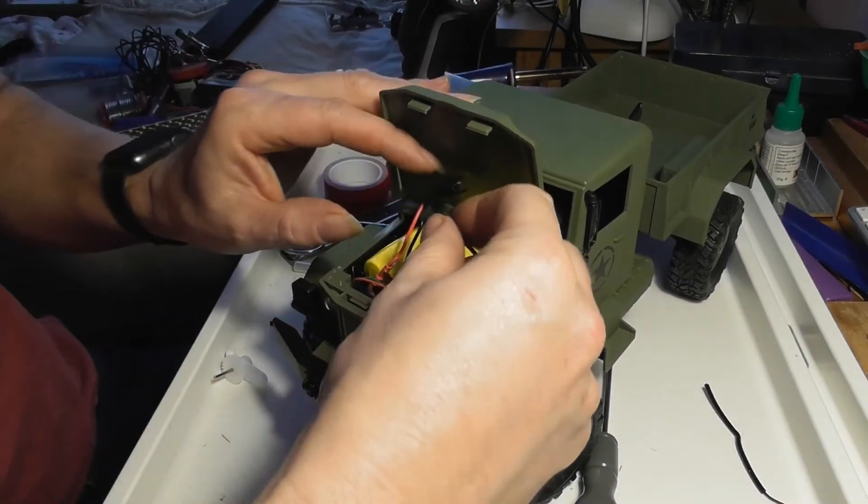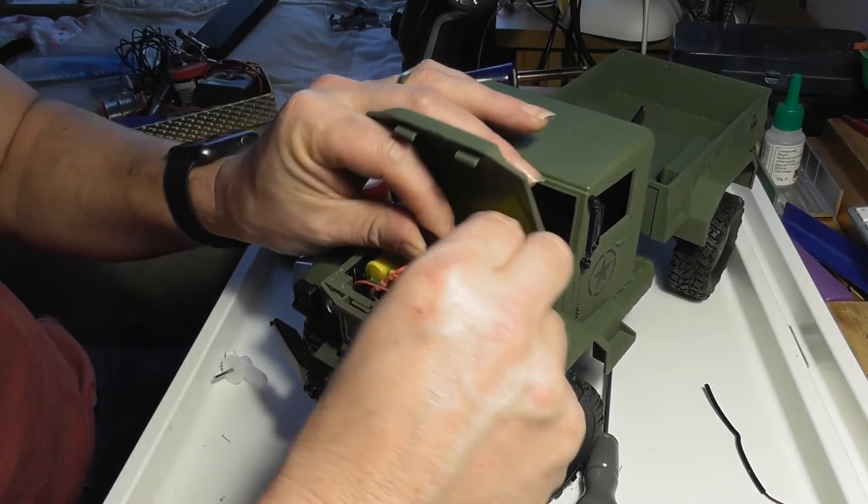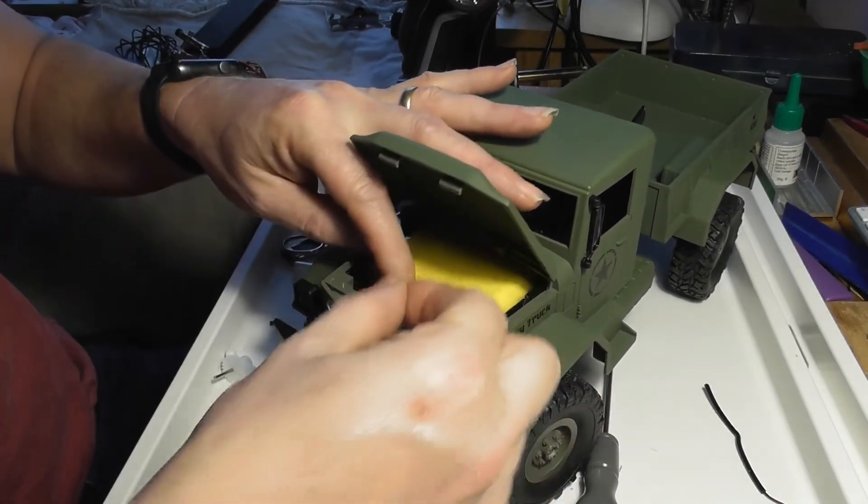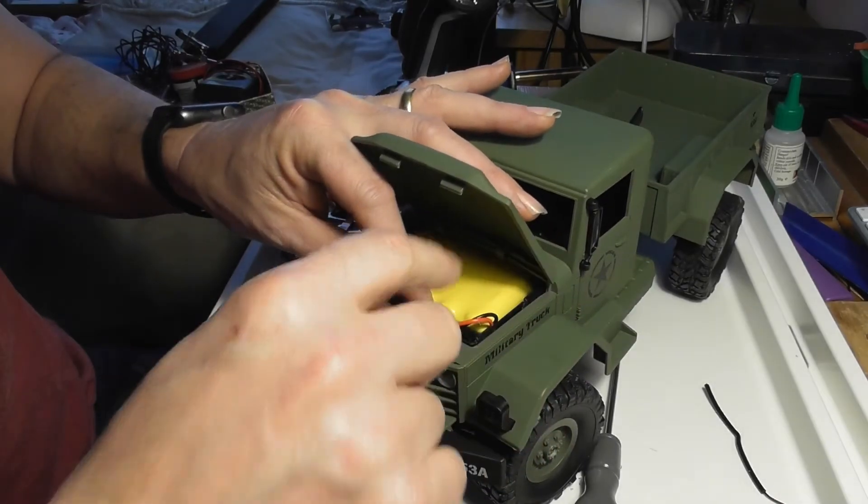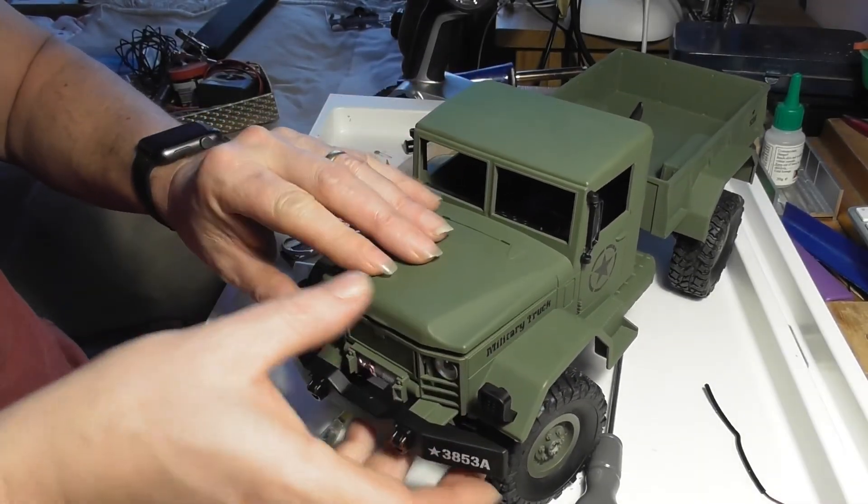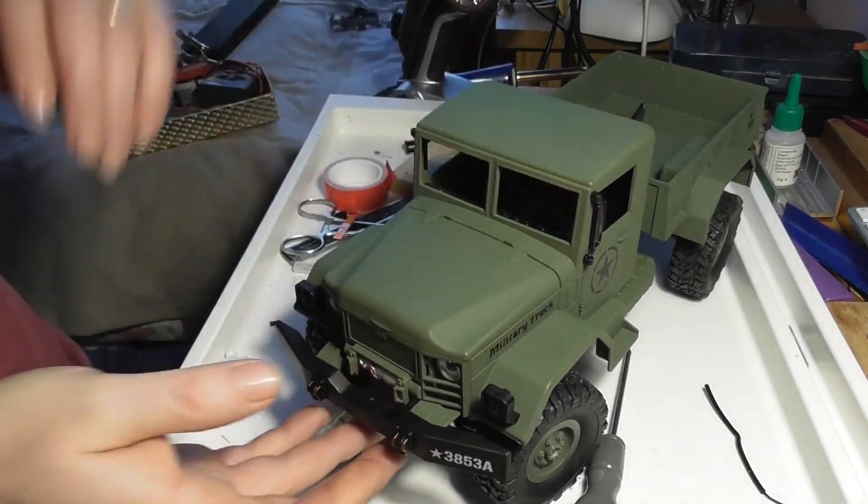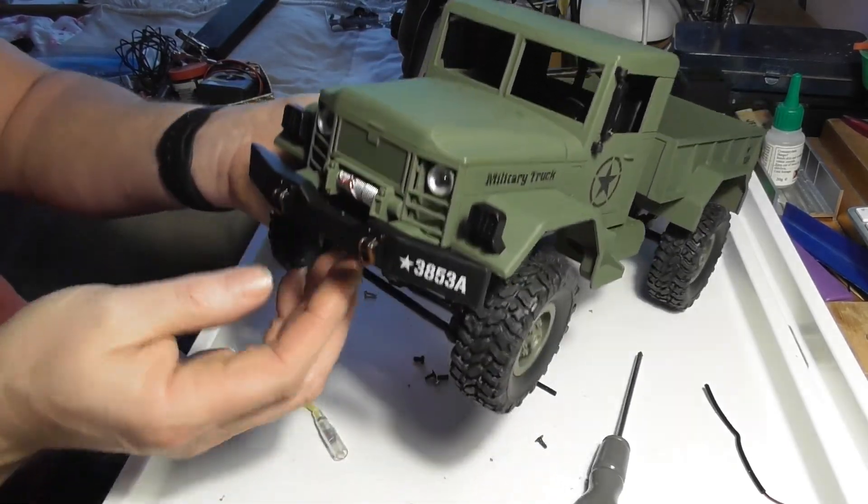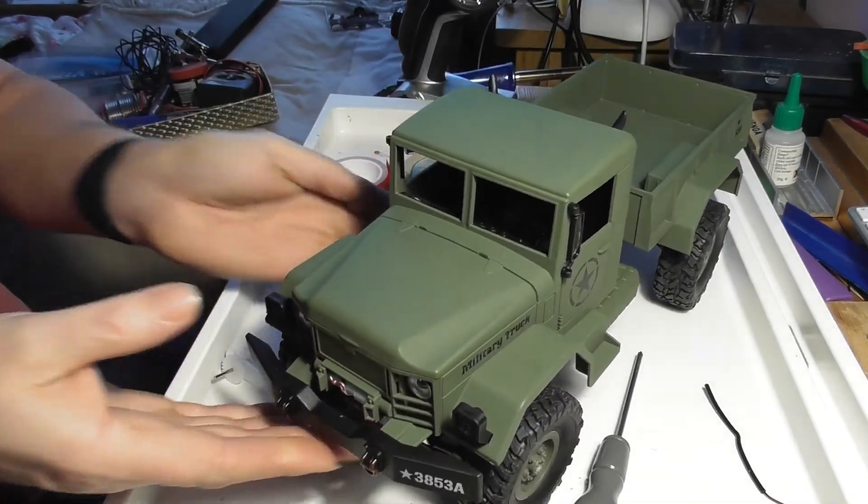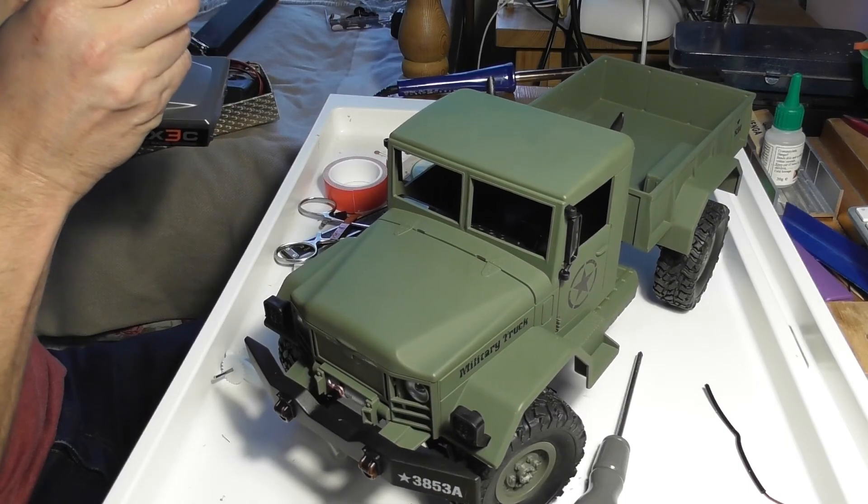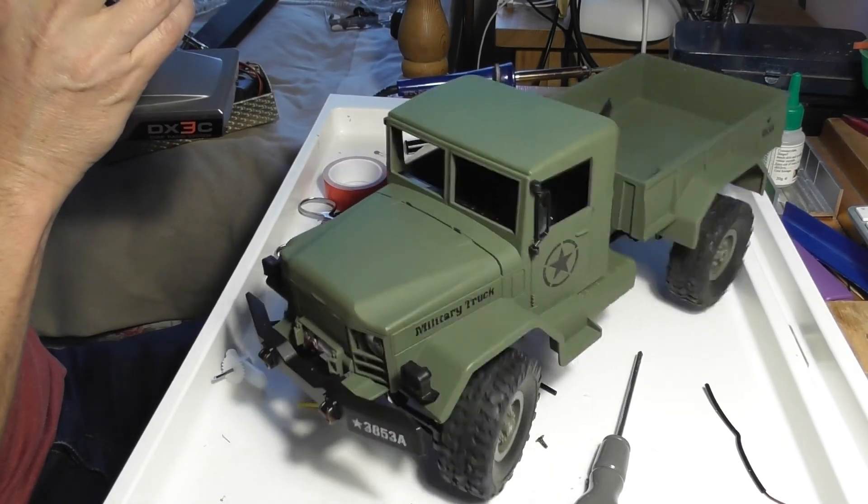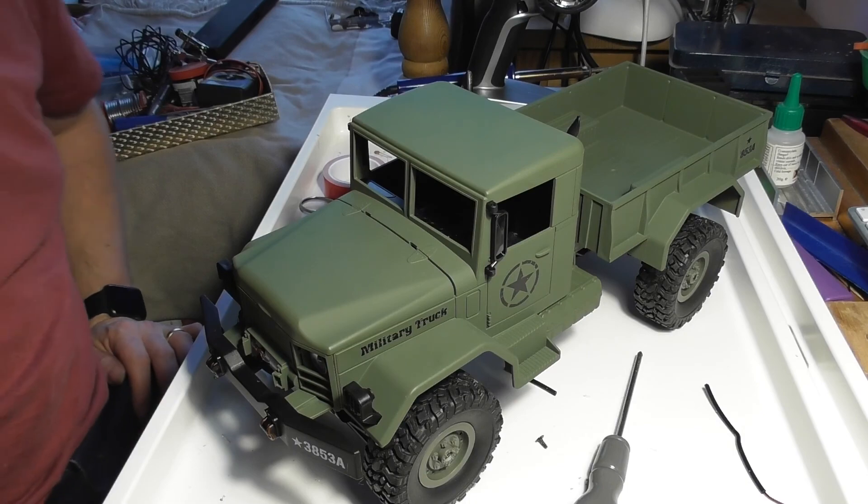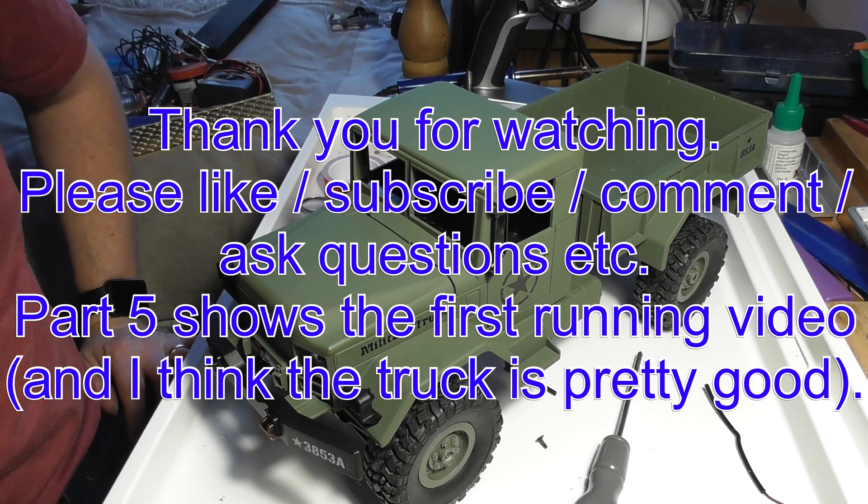The battery goes in and plugs in. These wires here are just to do with the lights, and I'll probably come back and address the lights in a later video. Turn on the transmitter, turn on the truck, and it seems to be working. I think I'll just take it outside very briefly and just do a quick run to make sure that it's working properly.